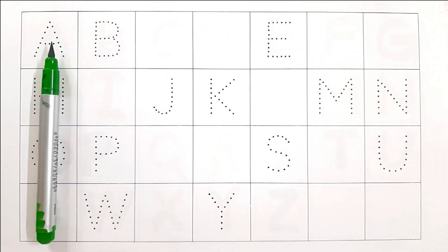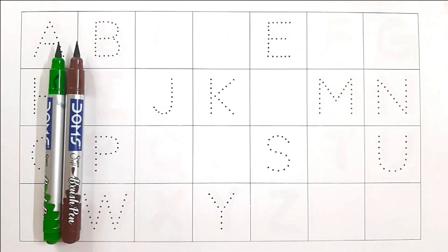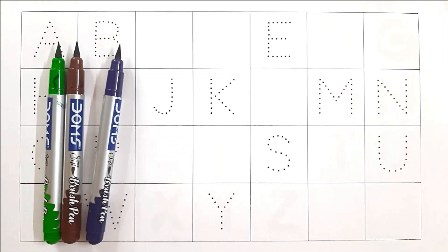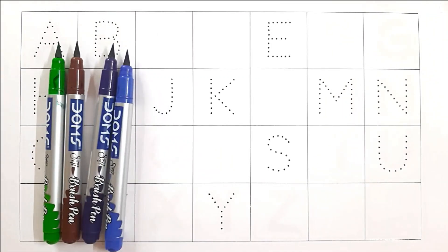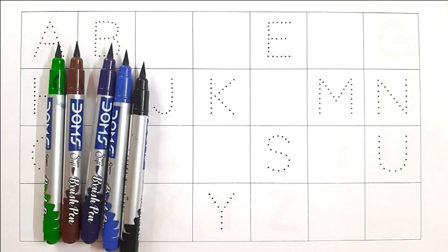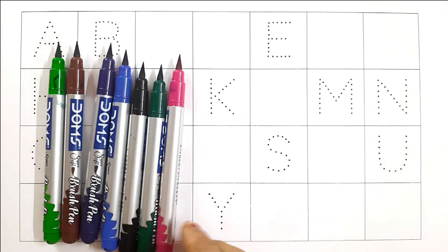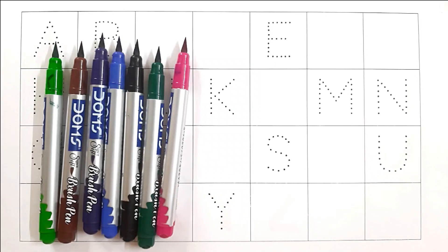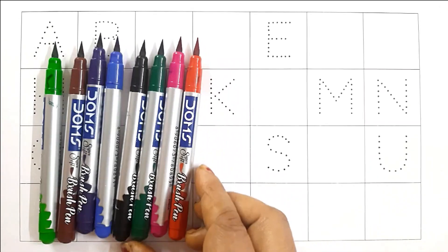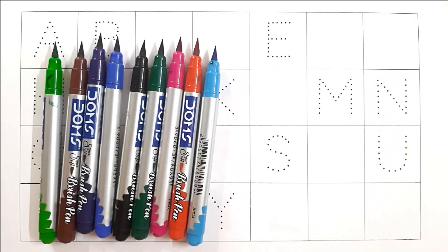A. Light green color, brown color, violet color, blue color, black color, dark green color, purple color, red color, sky blue color.